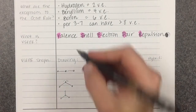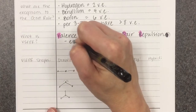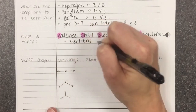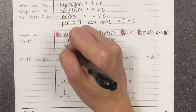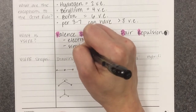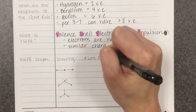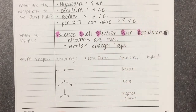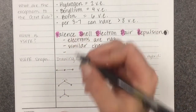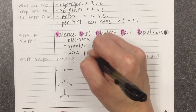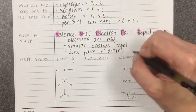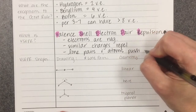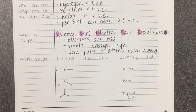What does VSEPR mean? Remember that electrons all have the same charge — they're all negatively charged. And so because they have the same charge, similar charges repel. So lone pairs of electrons and terminal atoms in the molecule will push away from each other. They repel each other and try to get as far away from each other within the molecule as they possibly can.